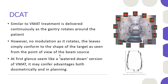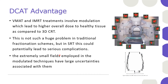It may confer advantages both dosimetrically and in planning. VMAT and IMAT treatment involves modulation, which leads to a higher overall dose to healthy tissue compared to 3D CRT. This is not a huge problem in traditional fractionation schemes, but in SRT this could potentially lead to serious complications. Extremely small fields employed in modulated techniques have large uncertainties associated with them, and one should verify small fields for their own systems.